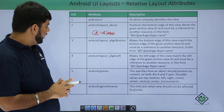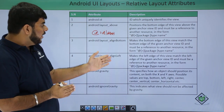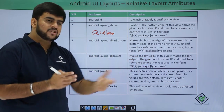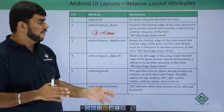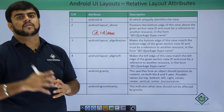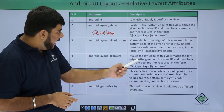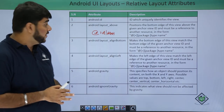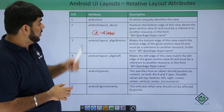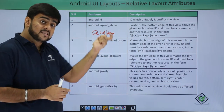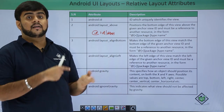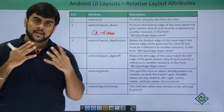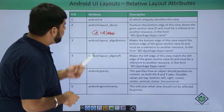Then we have align_left, which makes the left edge of that view match the left edge of the given view ID, and it must be referenced with another resource. We need to refer to this resource so that the UI can arrange both views in relation with each other.